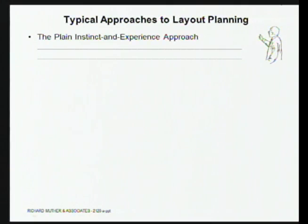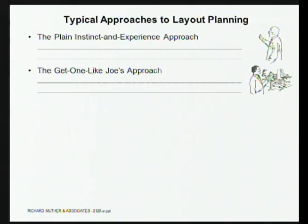When we start the course, we talk about how you got the layout you already have. Most people, if you had to name the process, would say 'we just sort of did it' — someone was given the assignment and came up with a plan. We call that the instinct-and-experience approach, and that's how most layouts get planned. The problem is you never know if you looked at all the relevant alternatives, and you have a hard time selling the result to approvers. Another approach is a best-practices approach, but the less you are exactly like those other facilities, the less that works.